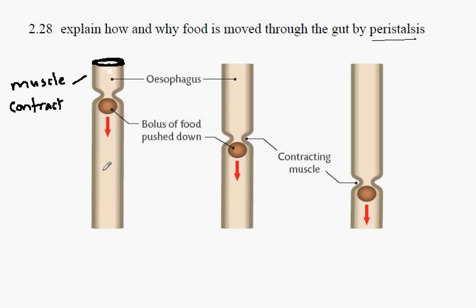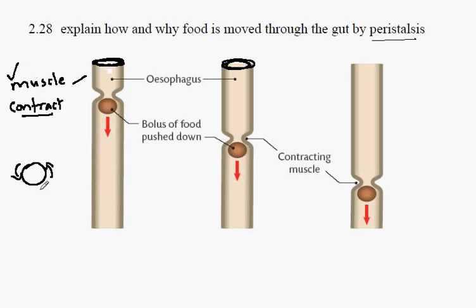The muscle is organized around the esophagus in a circular fashion. In cross-section, if we have the gut wall composed of muscle, when the muscle contracts, it gets shorter. In the case of muscle organized into a circle, this means that the diameter of the circle will decrease.